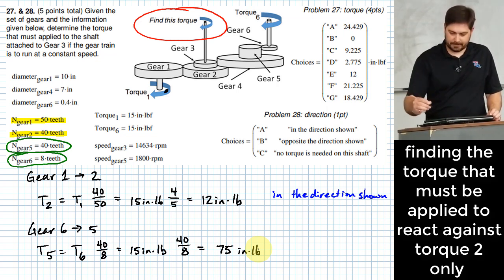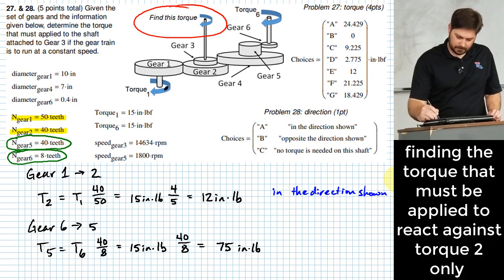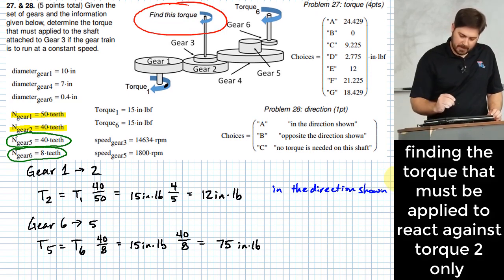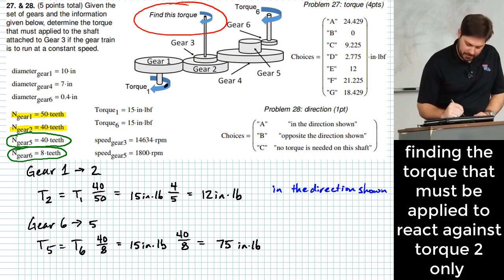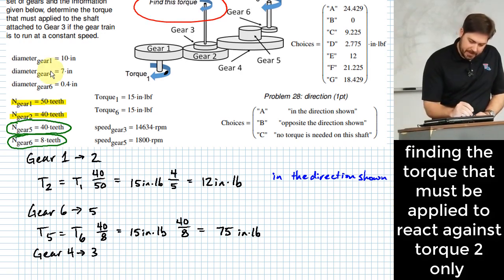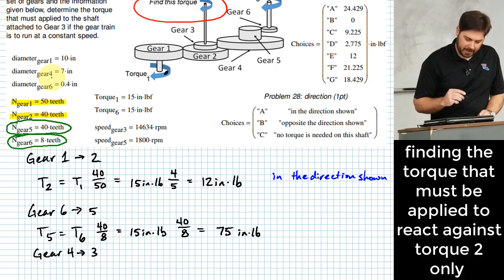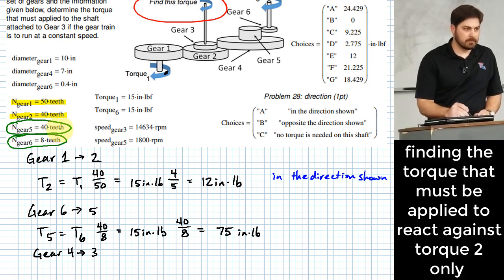What next? Okay. Yeah. So we probably need to figure out some sort of transition from gear four to gear three, right? So let me put that heading right here, gear four to gear three. And I know a diameter of four, but do I know a diameter of three? Nope. I don't have that. I don't know numbers of teeth for three or four.